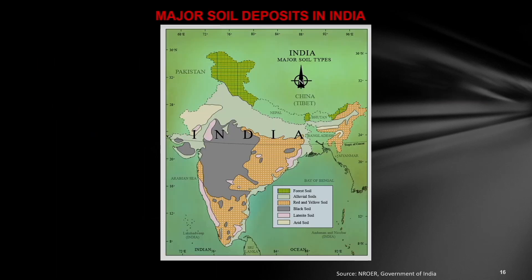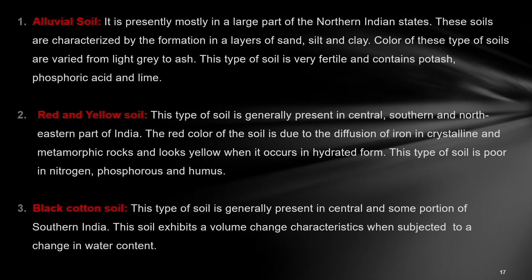These are the different kinds of soils which can generally be found in India — forest soil, alluvial soil, red soil covering most of India, red and yellow soil, black soil, laterite soil, arid soil, and some marine soils. Alluvial soil is present in most parts of India, mostly in the northern states. It is formed in different layers consisting of sand, silt, and clay. The color of these soils varies from grey to ash and the soil is very fertile because it contains potash, phosphoric acid, and lime.